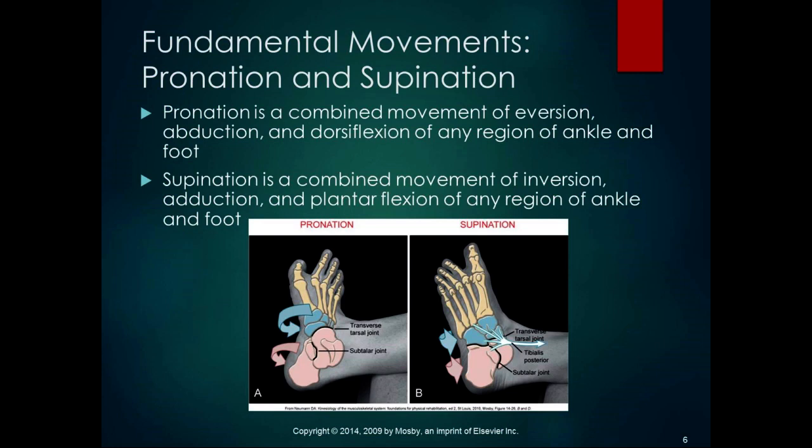We'll talk about overpronation more in your lower extremity orthopedics class — we're just defining motions right now. For supination, when you land on the heel, you start in a relatively supinated position: inverted, adducted, and plantarflexed. Then you move into a relatively pronated position: everted, abducted, and dorsiflexed. Know which movements are combined to make up pronation and supination, and then we'll talk about what happens at the joints when those movements occur.